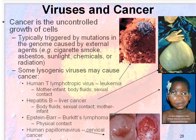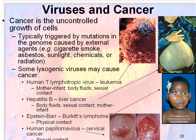In some cases, viruses are linked to cancer. Cancer is the uncontrolled growth of cells, typically triggered by mutations in the genome caused by external agents like cigarette smoke, asbestos, sunlight, chemicals, or radiation. But sometimes lysogenic viruses can actually cause cancer as well. For example, human T-lymphotrophic virus causes leukemia — transmitted from mother to infant, bodily fluids, or sexual contact. Hepatitis B can cause liver cancer, transmitted through body fluids, sexual contact, and mother to infant. Epstein-Barr, or Burkitt's lymphoma, through physical contact. And of course, human papillomavirus causes cervical cancer through sexual contact. This is a quick survey through viruses, their structure, how they replicate, and some of the human diseases from contact with certain viruses.